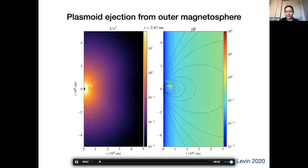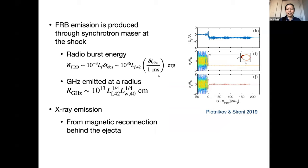We think the fast radio burst could be produced by the synchrotron-maser process at the shock eventually launched when the ejecta runs into the magnetic wind and surrounding medium. In this process, upstream cold plasma runs into a compressed magnetic field, causing all particles to radiate in the same phase — emitting coherently in radio. We find the radio burst energy is consistent with the observed value of about 10^35 ergs, with radio emission coming from a radius of about 10^13 cm.